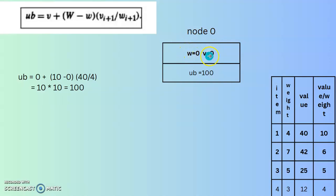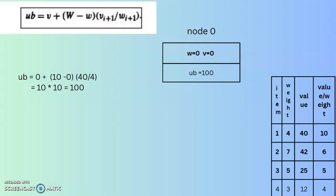At Node 0, w = 0 and v = 0. To calculate the upper bound, apply the formula: upper bound = v + (W − w) × (v[i+1] / w[i+1]). So: 0 + (10 − 0) × (40 / 4) = 0 + 10 × 10 = 100. The upper bound at the root node is 100.